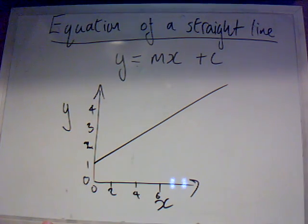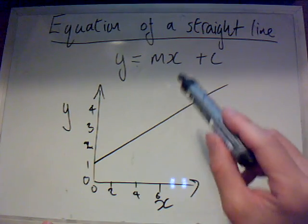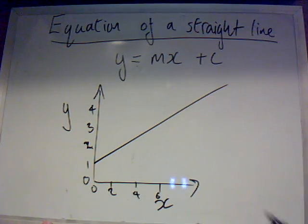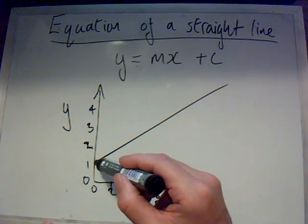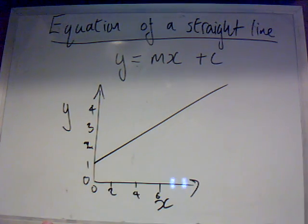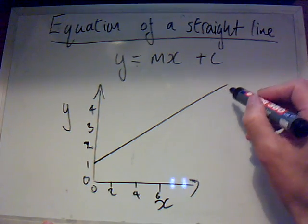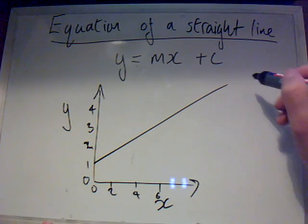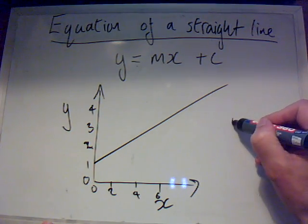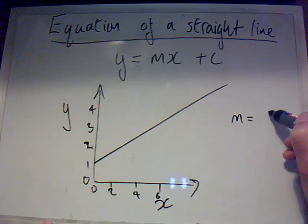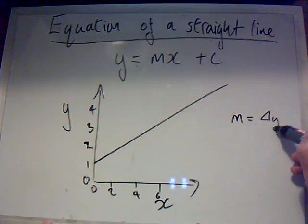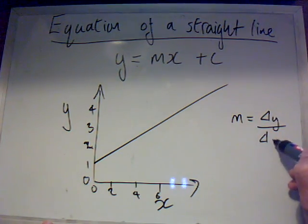Now what we're going to do is look at what the m and the x stand for. M stands for the gradient, and c is where it cuts the y-axis. The gradient is simply calculated by the change in y divided by the change in x. And we write this as m is equal to the change in y divided by the change in x.